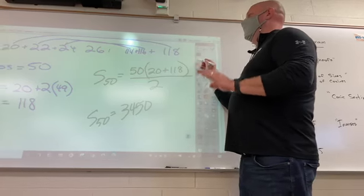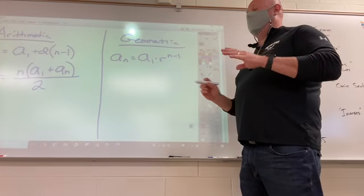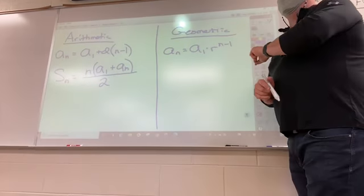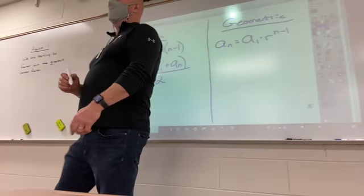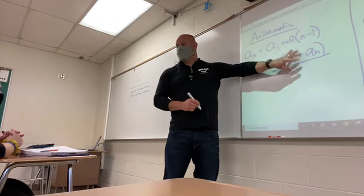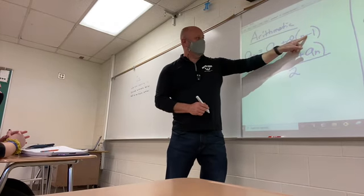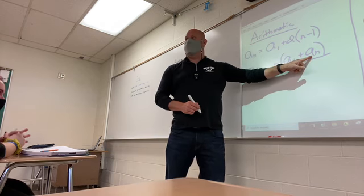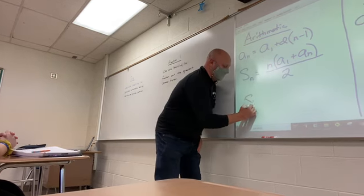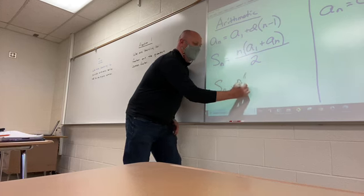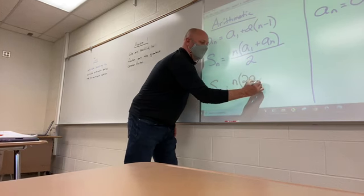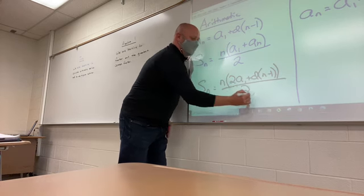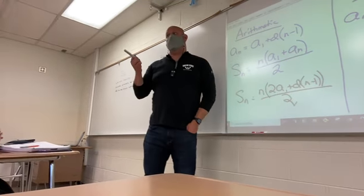Now remember, there is a hybrid formula. In the hybrid formula, you can survive without. But I'll show you the use of it. The hybrid formula, again, was just a combination of these two formulas. It's just take this, because this is what a sub n is, right? And you plug it into there. And the other s sub n formula is n, two a sub ones, plus the d times n minus one, divided by two. Now it's uglier. It looks uglier.